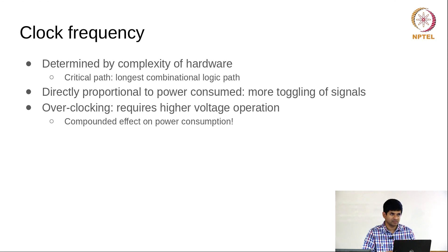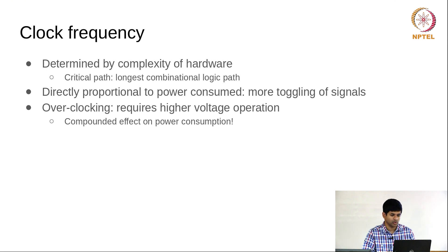You can do something called overclocking, which is basically operating at a higher voltage and therefore at a higher clock frequency than your system was nominally designed for. This has other problems: you can run at a higher clock frequency, but you are also running at a higher voltage, which has a more than linear effect on power consumption and can result in drastic increases in power. This is not only bad from an overall power consumption point of view, but it might also make the system thermally unstable and can actually destroy circuits if you are not careful.